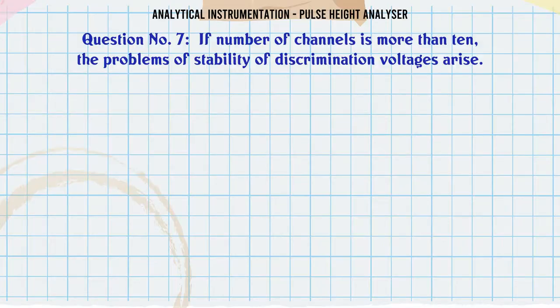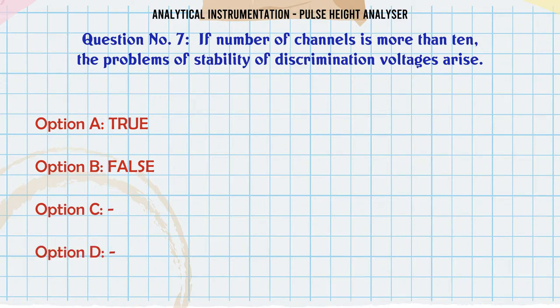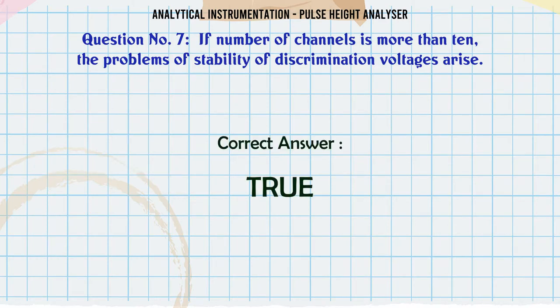If number of channels is more than 10, the problems of stability of discrimination voltages arise. A. True. B. False. C. - D. - The correct answer is: True.